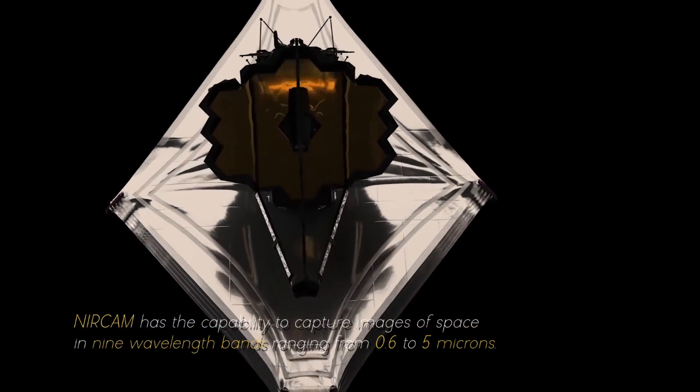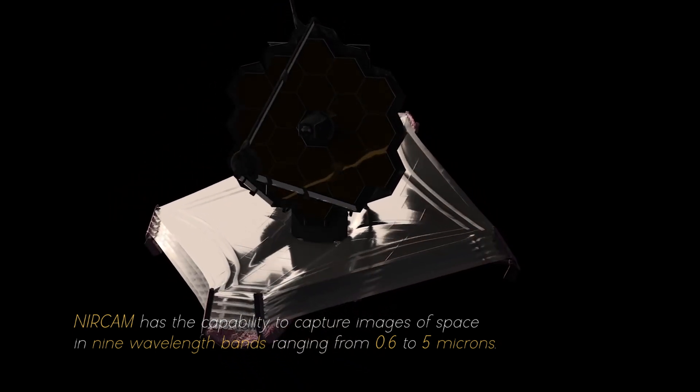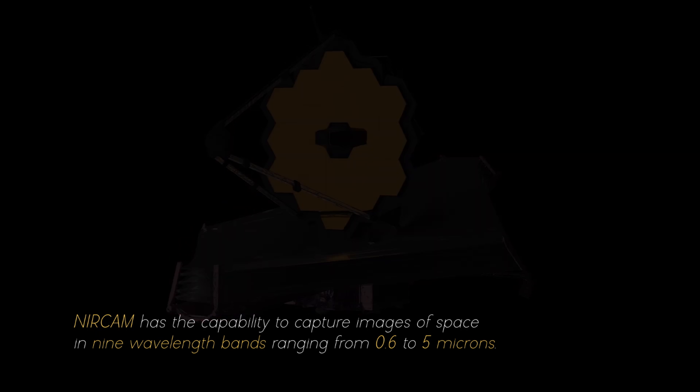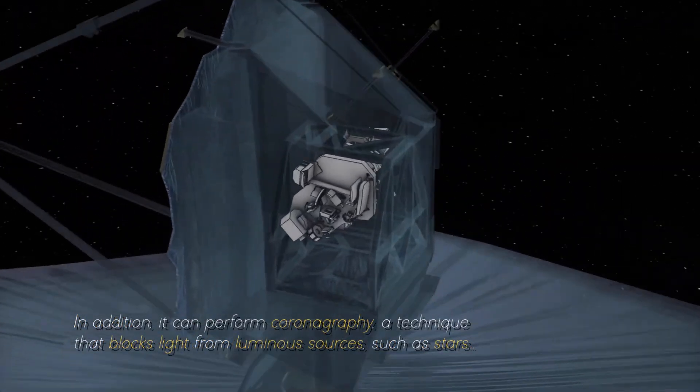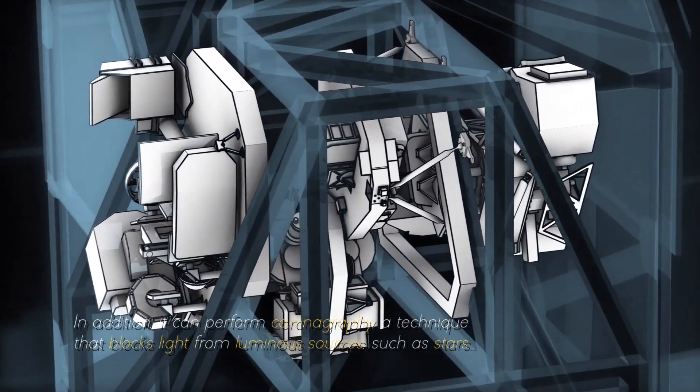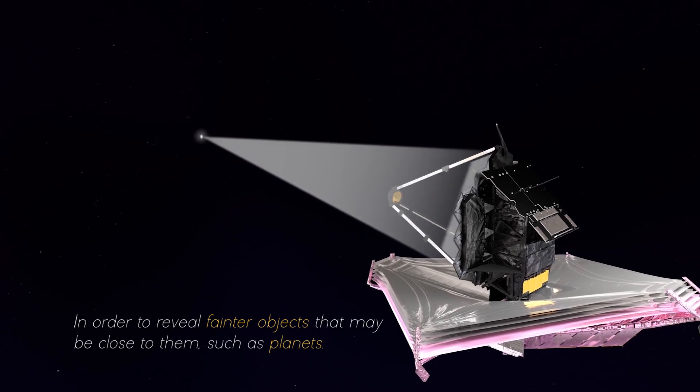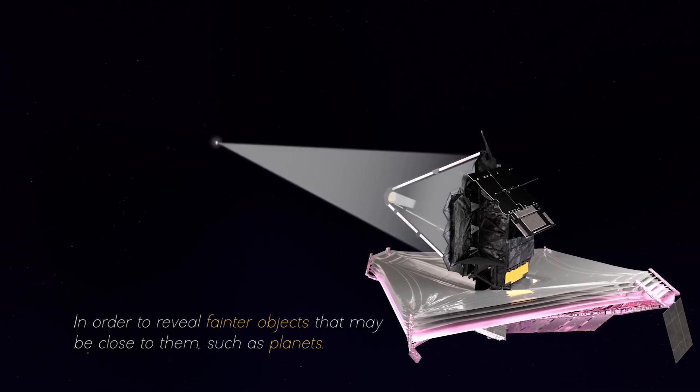NIRCam has the capability to capture images of space in nine wavelength bands ranging from 0.6 to 5 microns. In addition, it can perform coronography, a technique that blocks light from luminous sources, such as stars, in order to reveal fainter objects that may be close to them, such as planets.